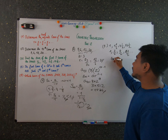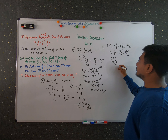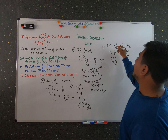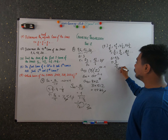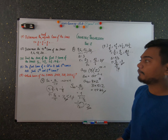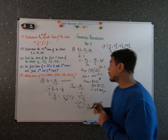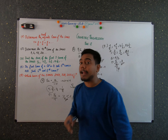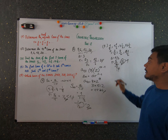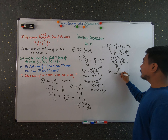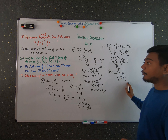The first term a = 3/2. To find the common ratio r, divide the second term by the first: r = (9/2) / (3/2) = 3. Since r = 3 is greater than one, we use the formula S_n = a(r^n − 1) / (r − 1).